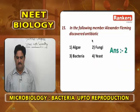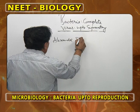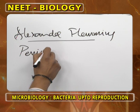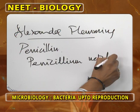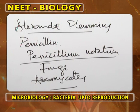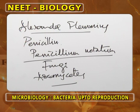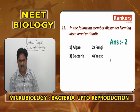In the following, Alexander Fleming discovered the antibiotic penicillin, which is obtained from Penicillium notatum. Penicillium notatum is a fungi belonging to class Ascomycetes. So the answer is fungi — not algae, not bacteria, not yeast — it is Penicillium notatum.